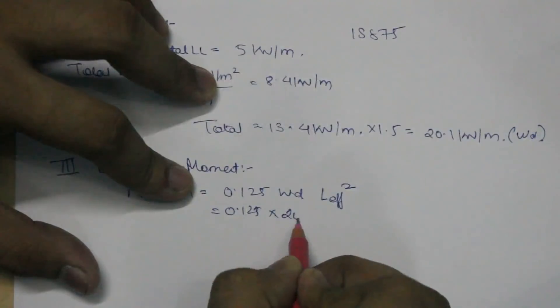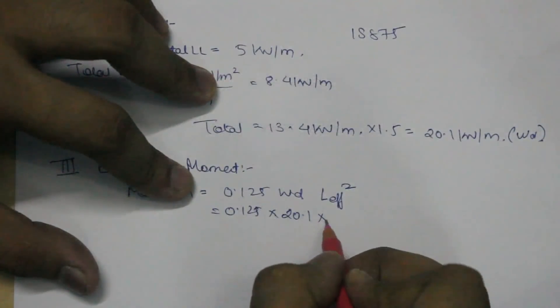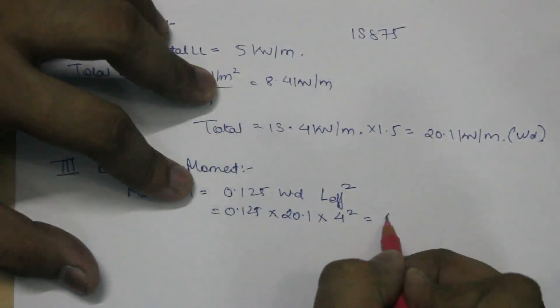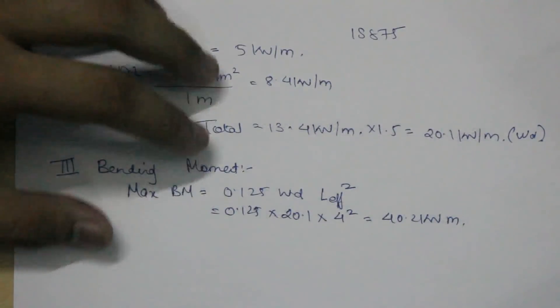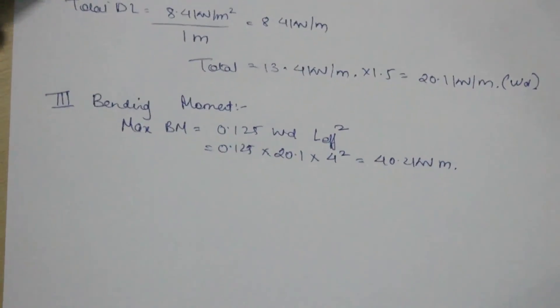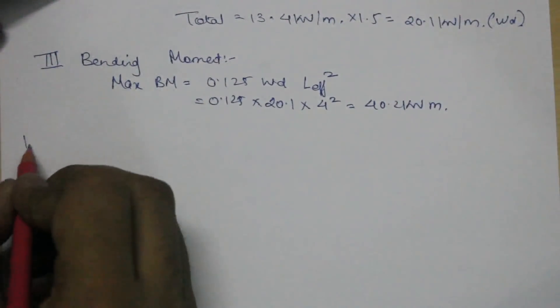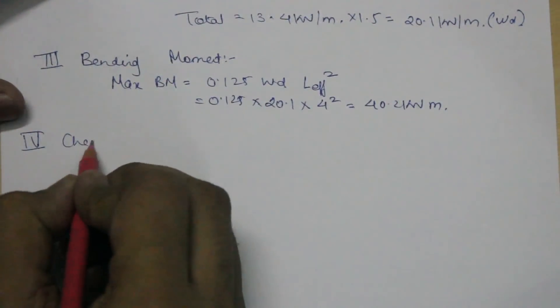Now further, the steps would be same as what we did for one-way slab. Fourth step is check for depth.